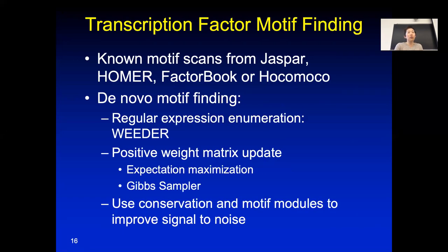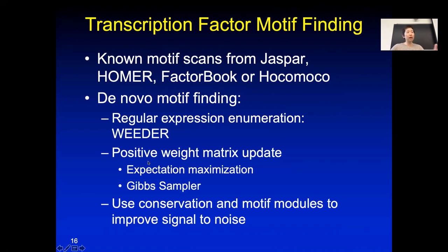Let's look at what we have learned in this class. We have learned about transcription factor motif finding. There are some known motif databases such as Jasper, Homer, Factor Book, and Hoco Moco. You can also look at de novo motif finding, and you can represent the motif either by a regular expression or with a probability weight matrix. Most of the time people use a weight matrix to represent a motif and they use sequence logo to show the motif patterns.